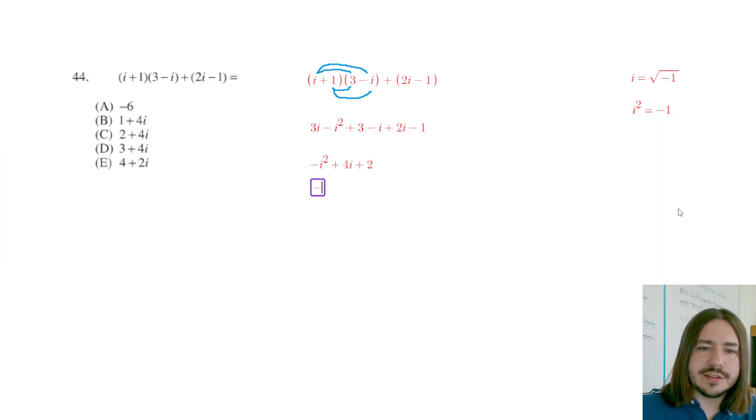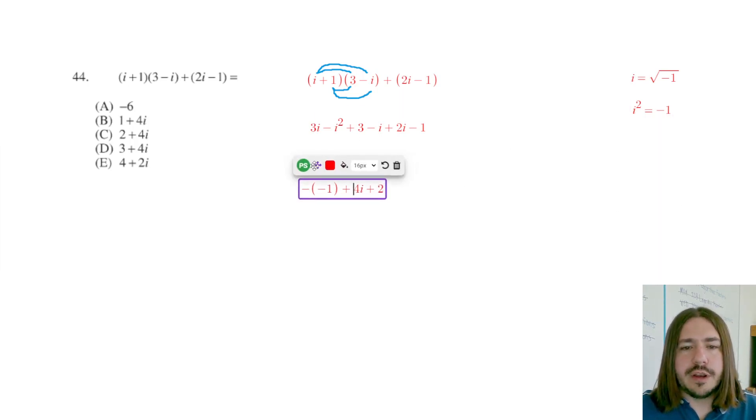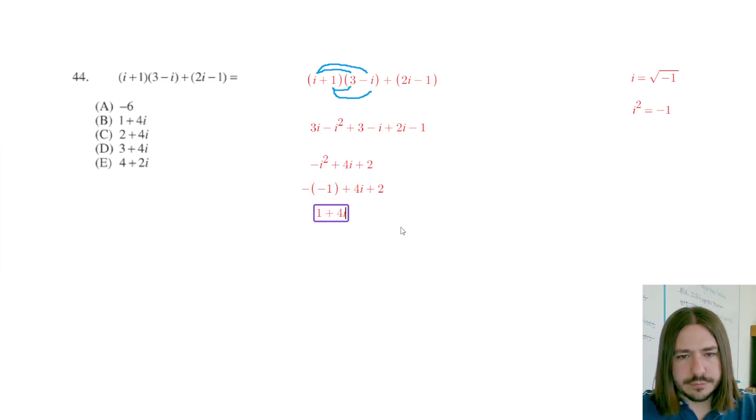So I'm going to rewrite this as negative negative 1 plus 4i plus 2. Negative negative 1 is really just positive 1. And now we can combine our like terms. 1 plus 2 is 3. So we get our final answer, 4i plus 3.